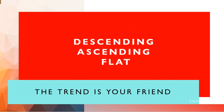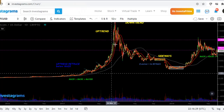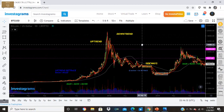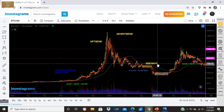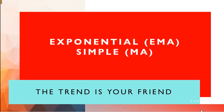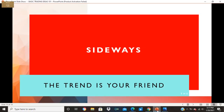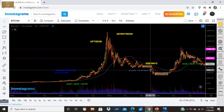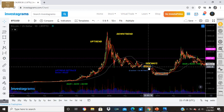The trend is your friend unless it bends. Descending is down, ascending is up, and flat is sideways. Sometimes they also call it a retrace. Moving averages — we typically use EMA, MA, or SMA. They have the same computation but different speeds.